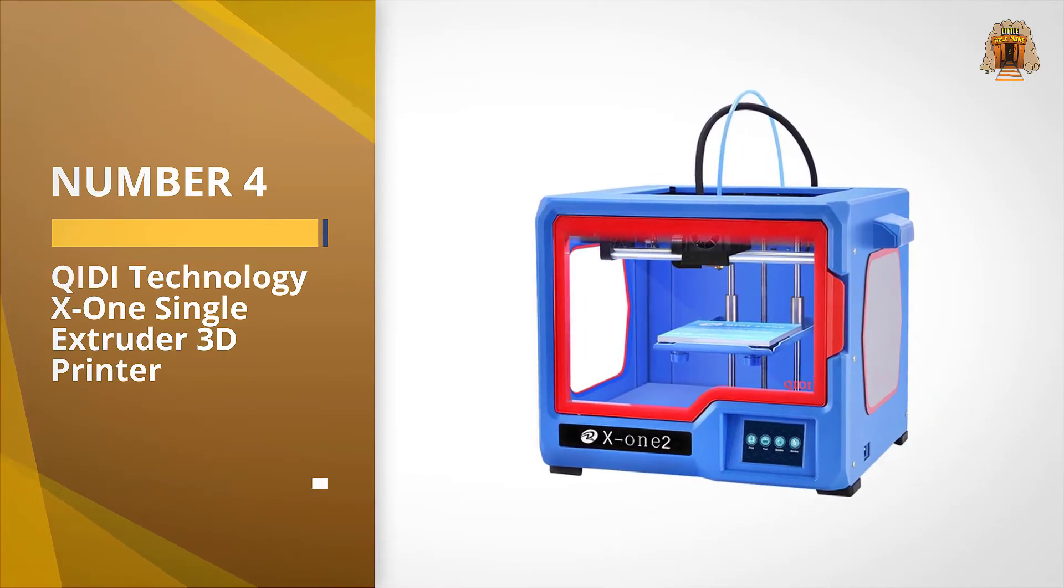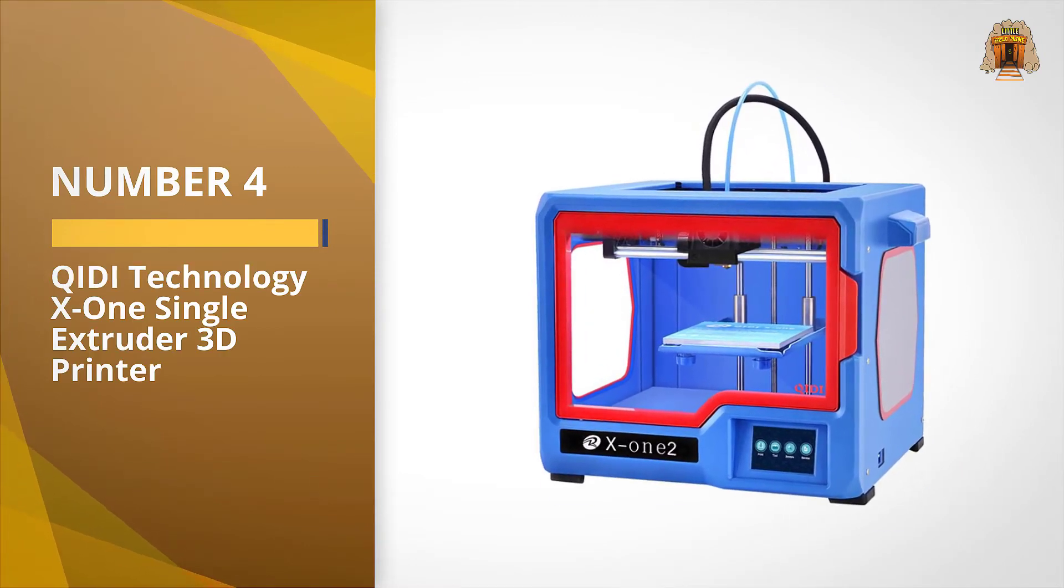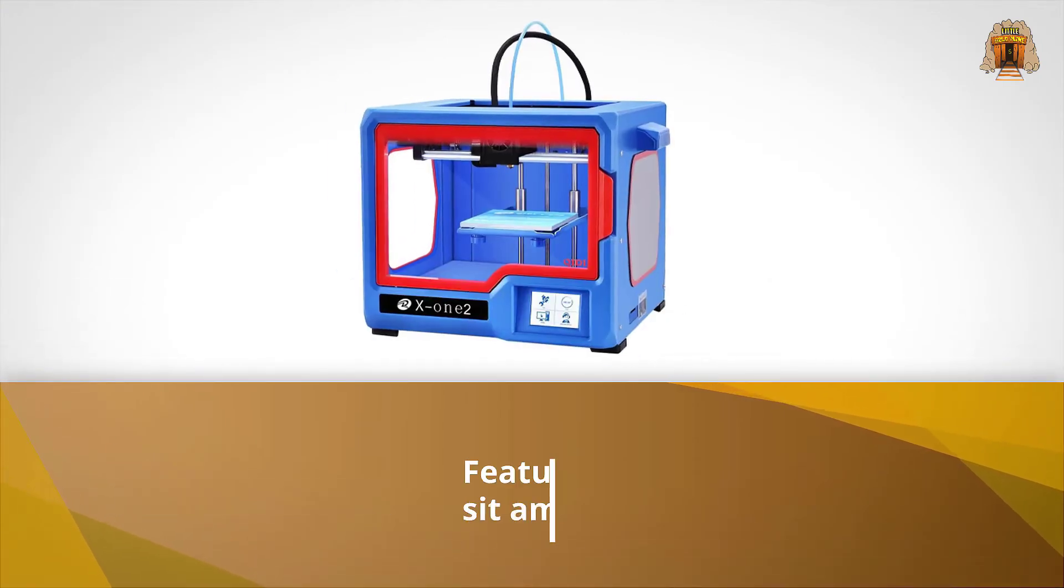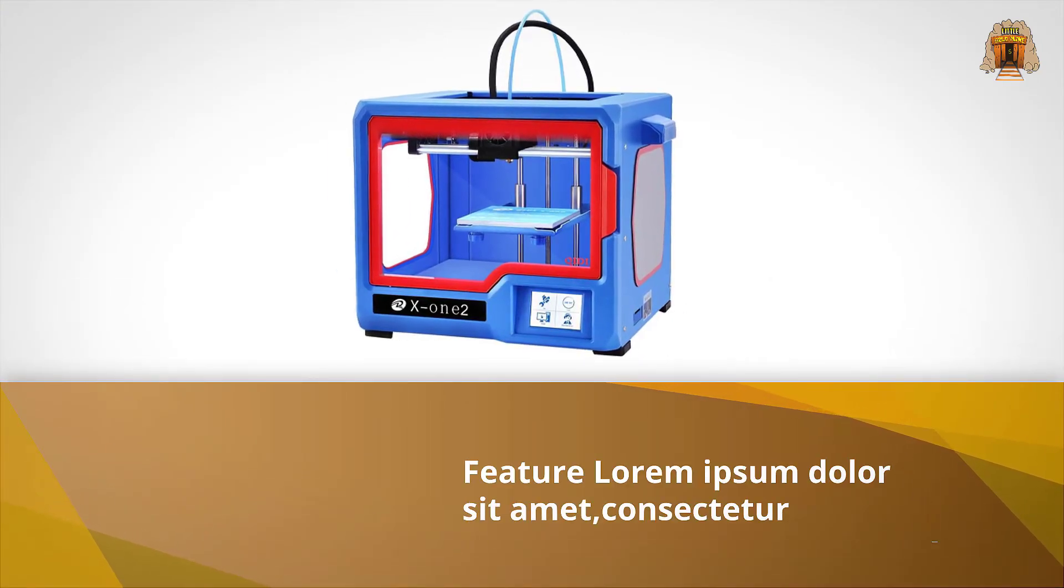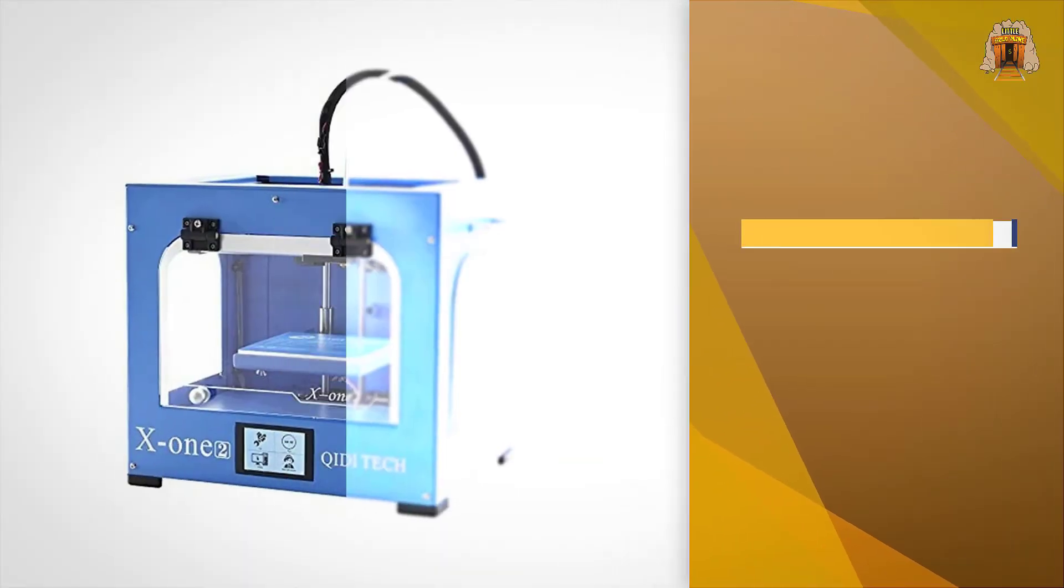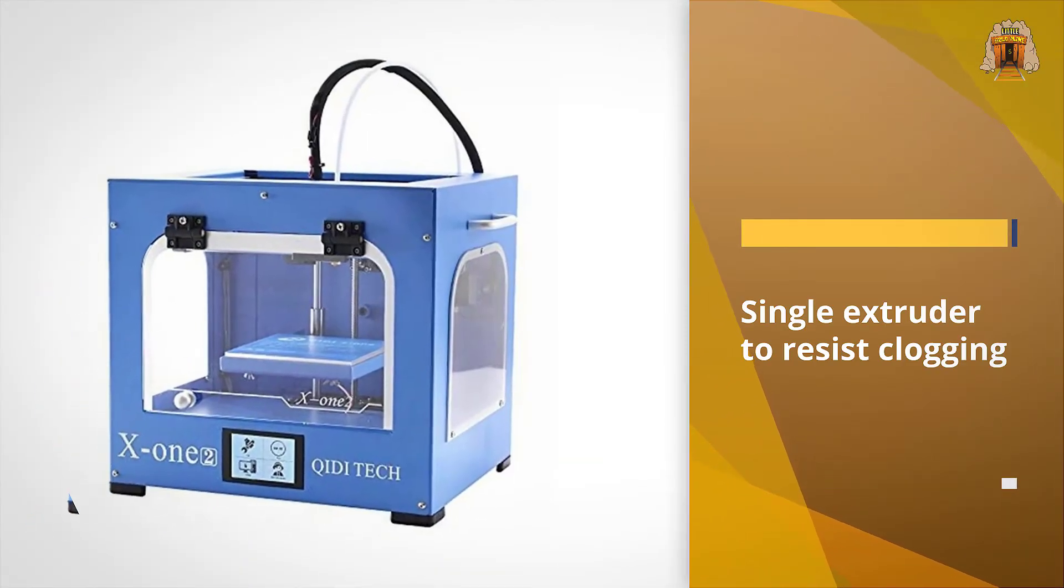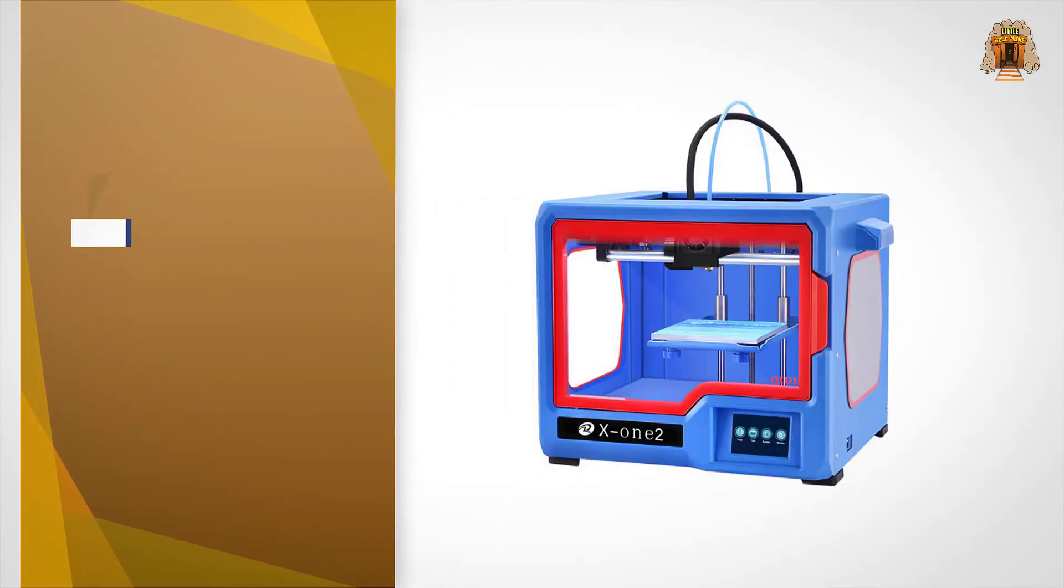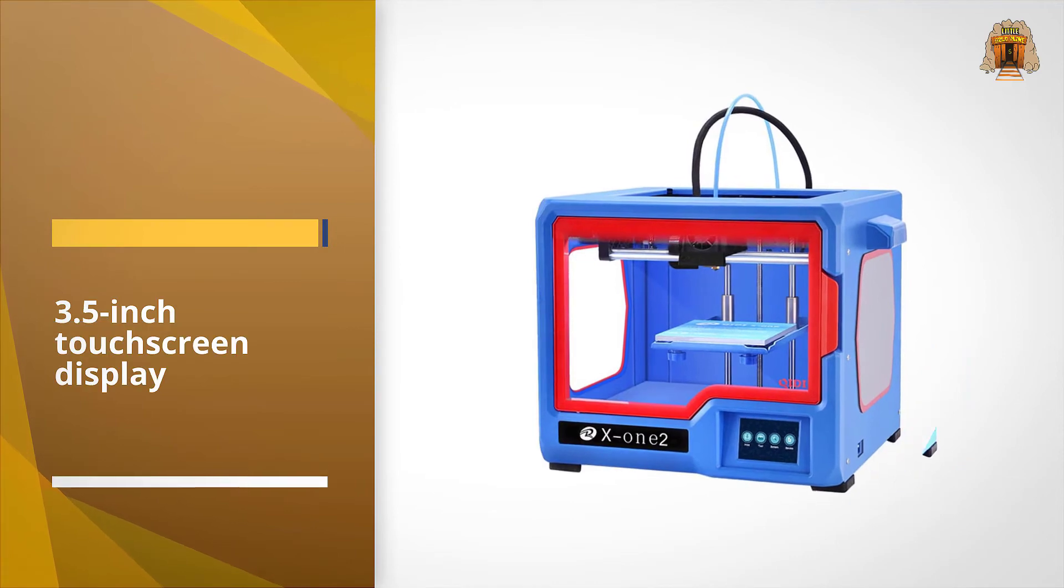Number four: Qi Di Technology X1 Single Extruder 3D Printer. The best 3D printer under $500 for ready to use right out of the box assembly. This printer comes pre-assembled, just feed in the included filament, level the printing platform and you can be running your first test print in only minutes.